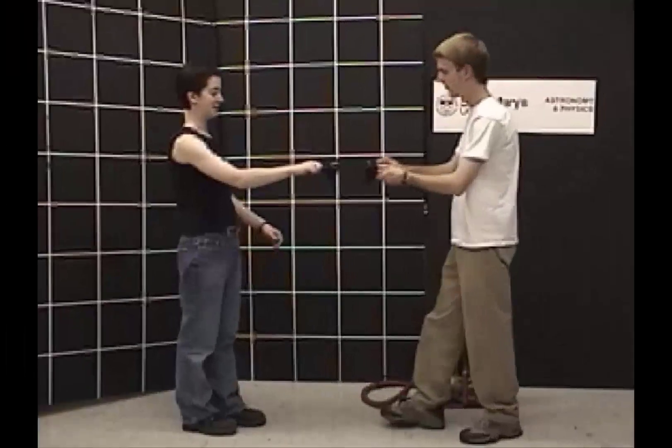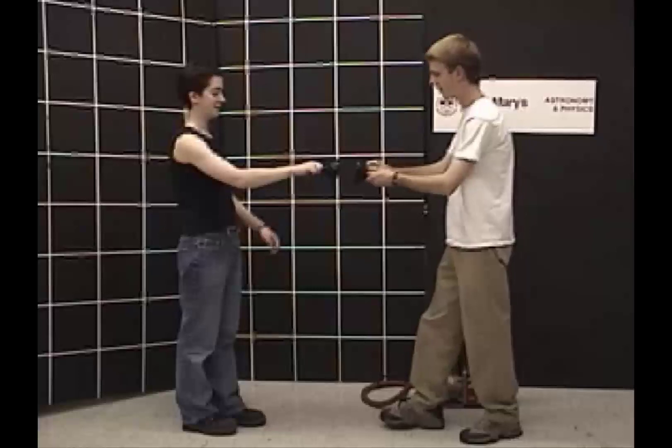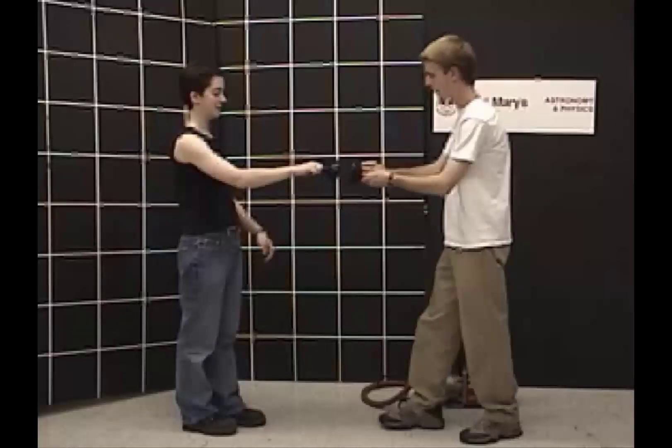So here we have two students and what they're going to do is put together two hemispheres, if you will, two sides of a sphere so that then they'll have one uniform sphere. And they'll show you that before doing anything they can simply pull apart these spheres. But then when they evacuate the air within the spheres and then try to pull apart it's much more difficult.